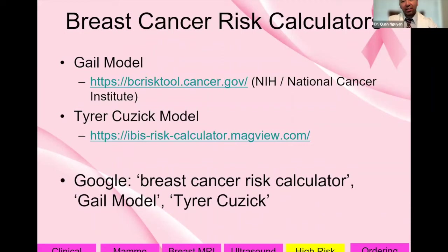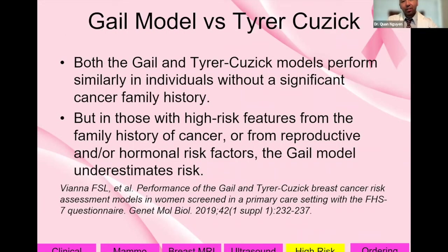Breast cancer risk calculators — the Gale model and the Tyrer-Cuzick model — are accessible online where you can enter patient information to get a lifetime risk percentage. Both models perform similarly in individuals without a significant cancer family history, but in those with high-risk features, the Gale model underestimates risk. Most clinics use the Tyrer-Cuzick model because it does not underestimate risk.